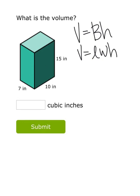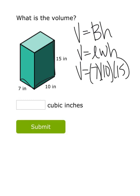My length, width, and height would be 7 times 10 times 15. So when I multiply the length times width times height, I get 1,050 cubic inches.